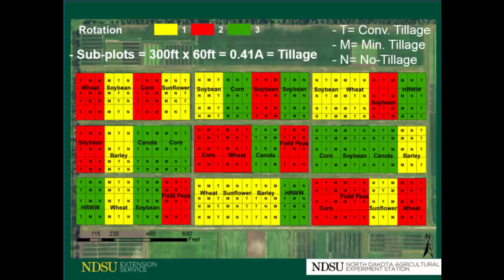On top of the crop rotation plots, we have the tillage treatments running north-south. We have conventional tillage, minimum tillage, and no tillage.